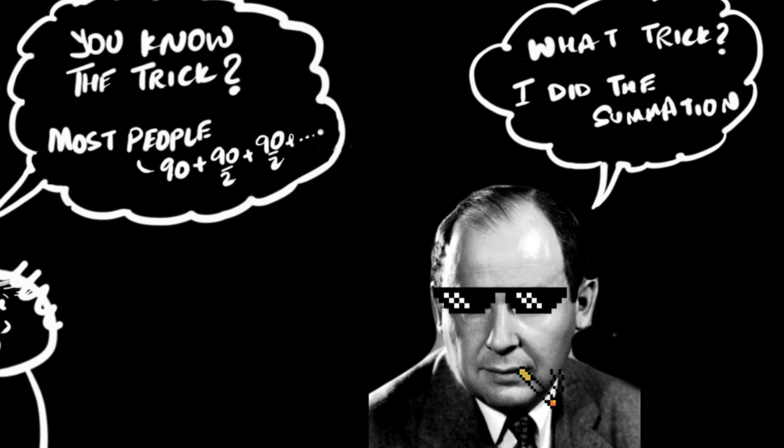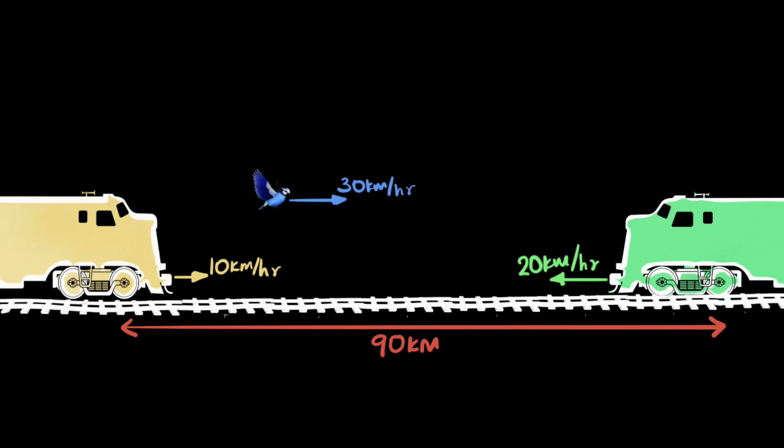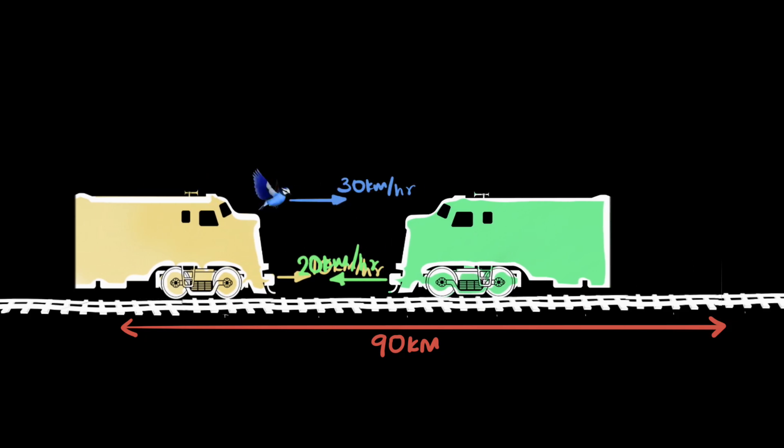And now as promised, here's the challenge question. Instead of a station, what if there was a second train here, moving to the left at say 20 km per hour? What would now be the total distance traveled by the bird?